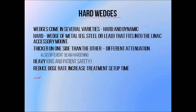The type of wedge filter I just described is called a hard wedge. It's a wedge-shaped lump of metal, so it's thicker on one side than the other. It can be placed on a linac accessory mount just below the window through which the beam exits the treatment head. It works by attenuating parts of the beam that pass through the thicker side more than those that pass through the thinner side.